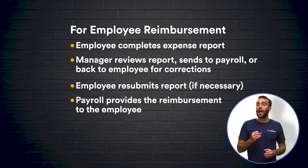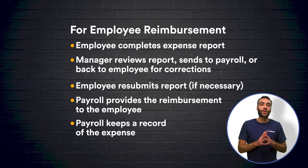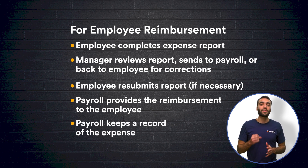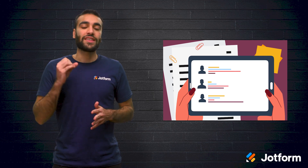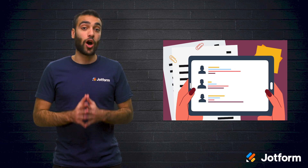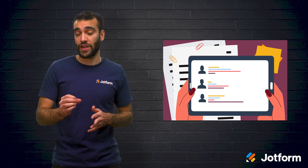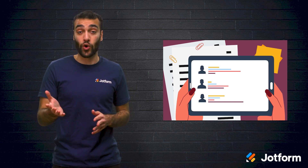Third, payroll adds the total amount of reimbursement to the employee's paycheck. And fourth and finally, payroll creates a record of the expense to track departmental spending. While your expense report process might look different, the idea is the same. Writing out the steps will help you see who is responsible for each step and to properly assign roles.